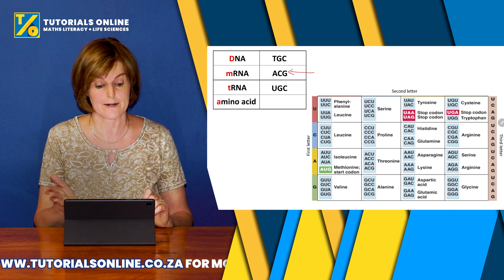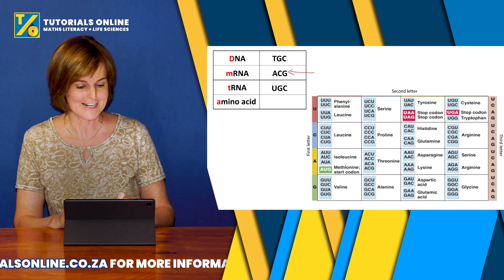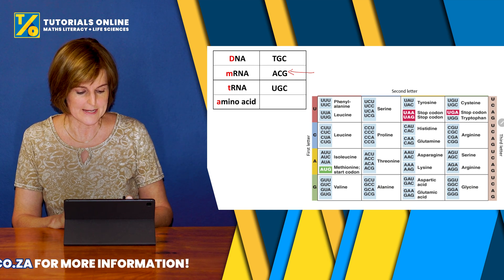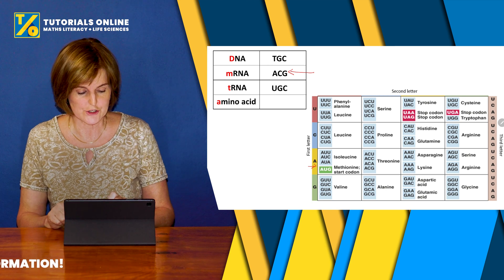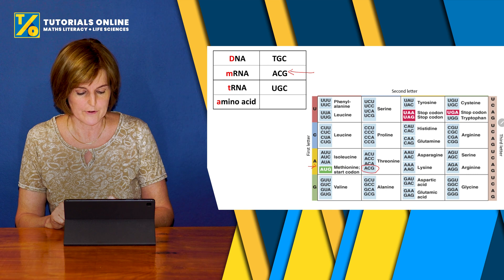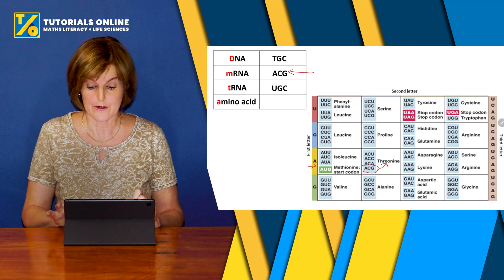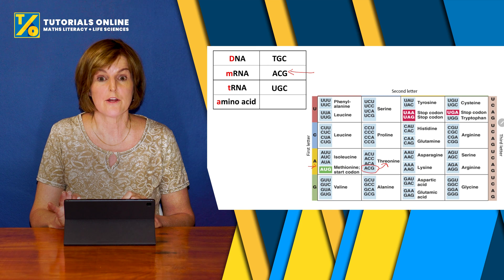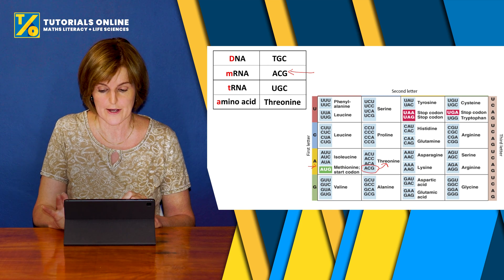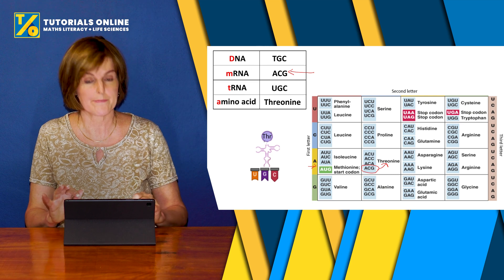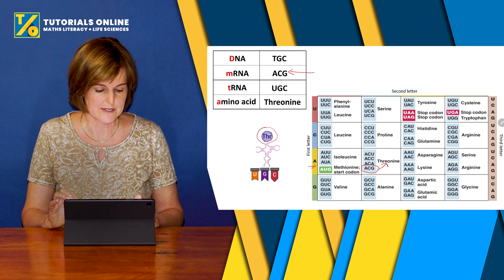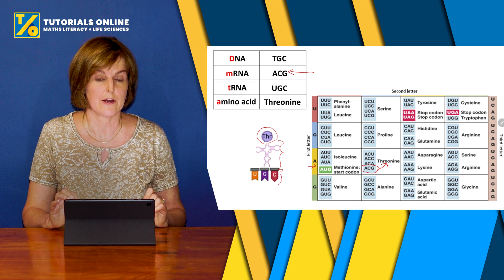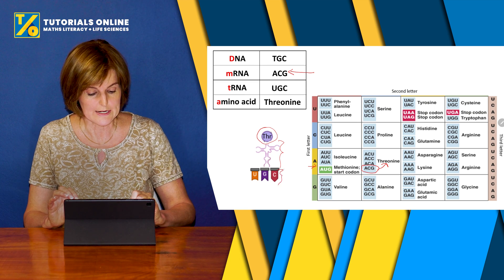Looking at the table: A is in the yellow section, and going across we find ACG. The amino acid is threonine. You can see the tRNA carrying threonine has the anti-codon UGC, which links up with the mRNA codon ACG — that connection is the key to understanding translation.